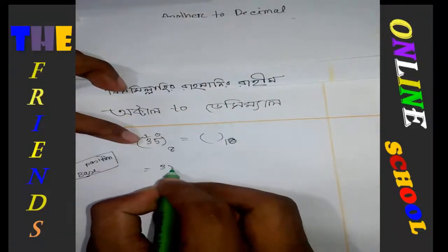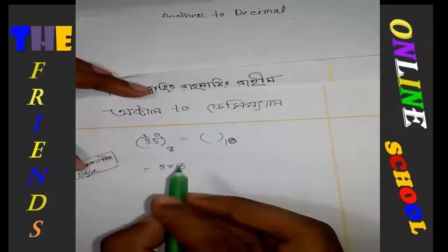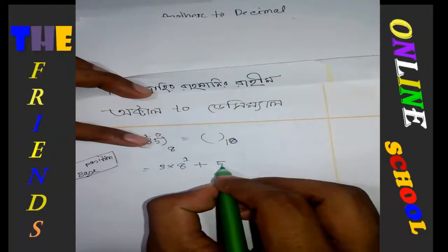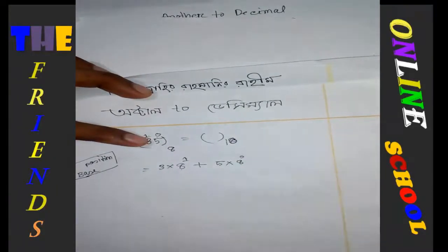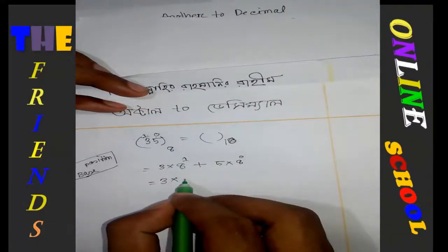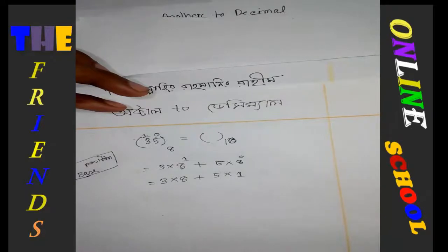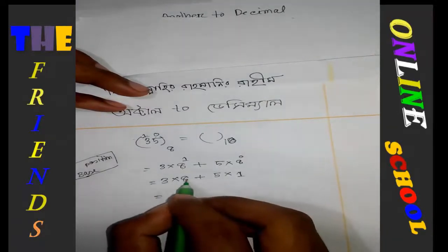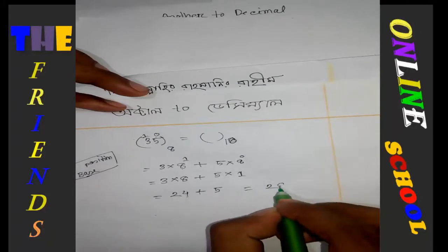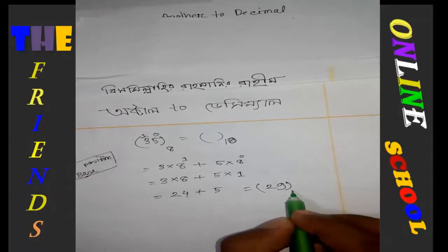The digits are 3 and 5. Position 0 has base 8. So it's 3 times 8 to the power 1, plus 5 times 8 to the power 0. That equals 1. Now 8 to the power 0 is 1. This gives us 3 times 8 which is 24, plus 5 times 1 which is 5. That means the answer is 29. So (35)₈ equals (29)₁₀.